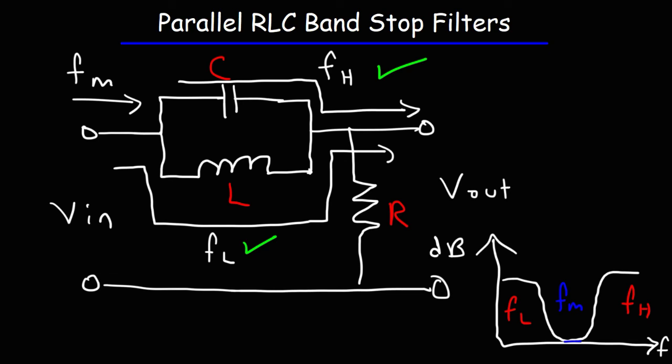This is an example of a bandstop filter — it allows high-level and low-level frequencies to pass through while providing the greatest impedance to mid-level frequencies.